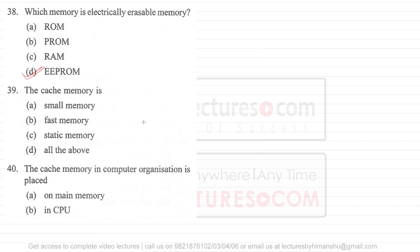Question 39: cache memory is very fast and very small. It is also static memory and faster than main memory. Both options A and B are correct, so there is a high probability that all of the above is the correct answer. Option D should be the answer for this question.